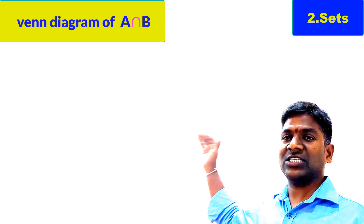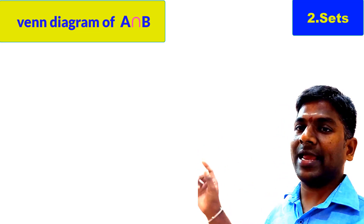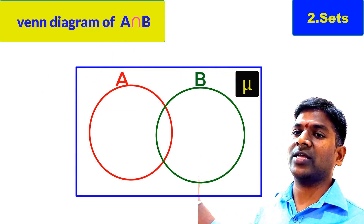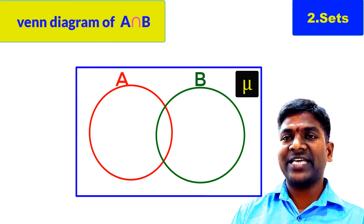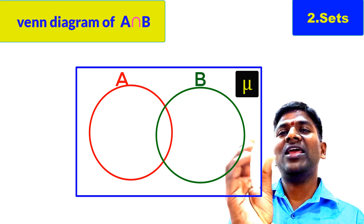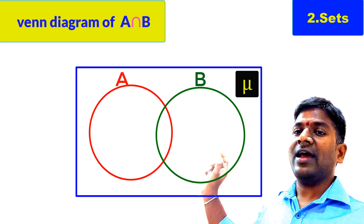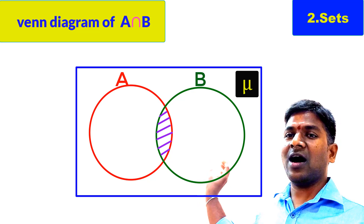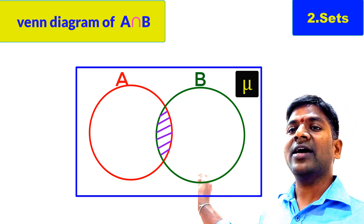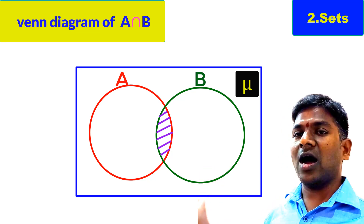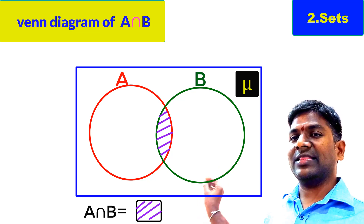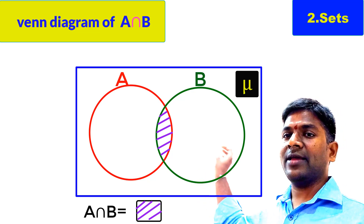Now let us represent A intersection B by Venn diagram. As usual we draw a rectangle with the universal set symbol in the right top corner, and two overlapping circles representing set A and set B, as shown on the screen. A intersection B is a set consisting of the common elements belonging to both set A and set B. A intersection B takes only the common elements, so we shade the common overlapping part of set A and set B.